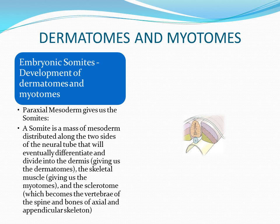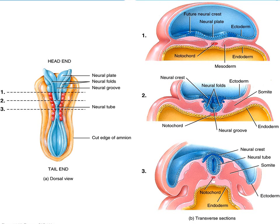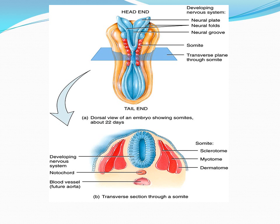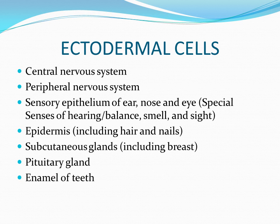Simultaneously, while the neural tube is developing — and for those of you that have the PowerPoint presentation, recall that the sclerotome is closest to the neural tube in the mesoderm — the ectoderm and the neural tube continue to enlarge and differentiate. Ultimately, the ectoderm cells differentiate into the structures of interest to our discussion today, such as the central nervous system.